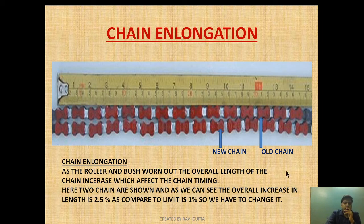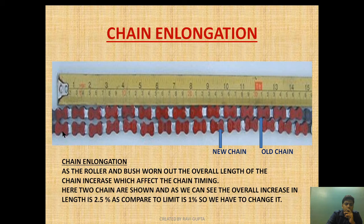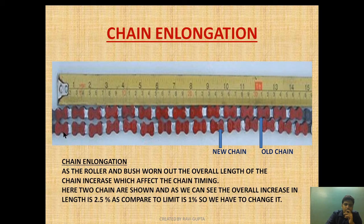As you can see here, there are two chains — this one is the new chain, and this one is the old chain which has been running for a specific period of time. The chain is colored in red and white. When they are placed side by side, these two are not perfectly in line — the upper one is slightly misaligned compared to the lower one.